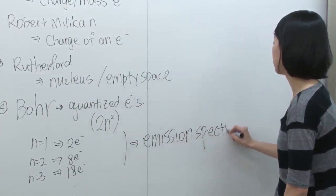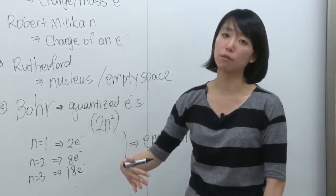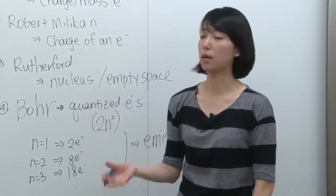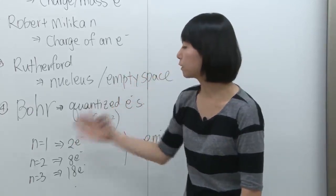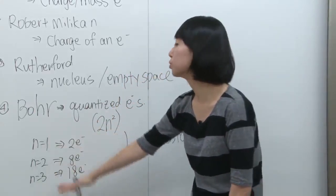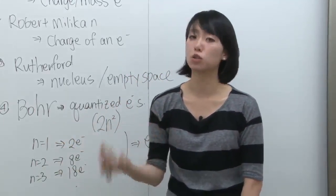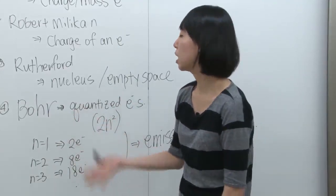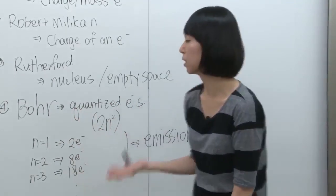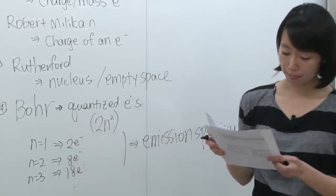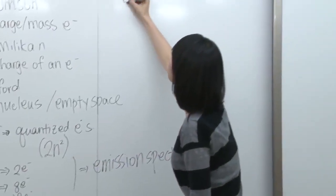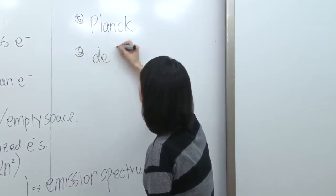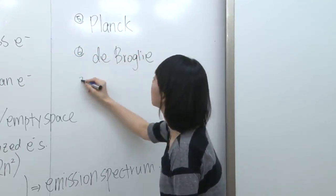In the emission spectrum, when electrons go down the energy level, there is extra energy that gets emitted as light — that's called photons. Different jumps, like three to one or two to one, can have different wavelengths and different energy. Those kinds of jumps can be classified into three series: Lyman series, Balmer series, and Paschen series. Today we're going to talk about Planck, De Broglie, and Heisenberg.